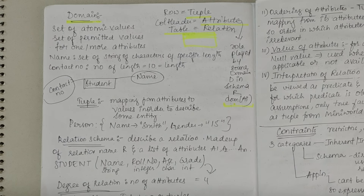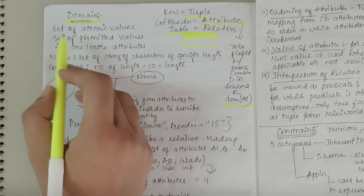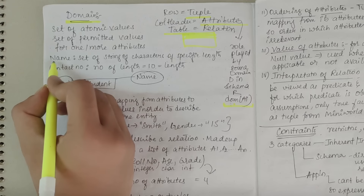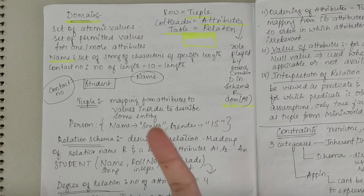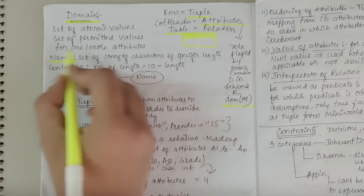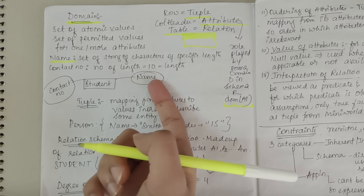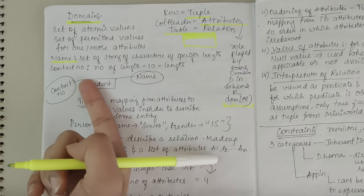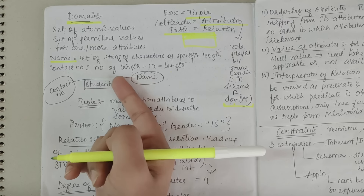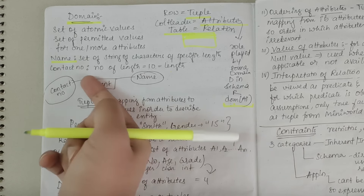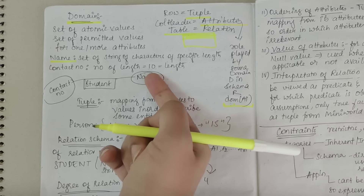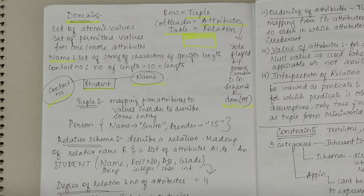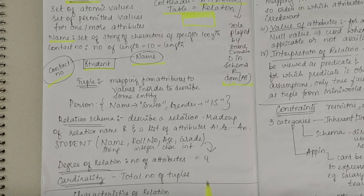Now understanding what a domain is: domain is a set of atomic values, or set of permitted values for one or more attributes. For example, for name, the domain is a set of character strings of specific length — name can't be an integer. Contact number is a number — an integer. So for student, name and contact have specified domains.